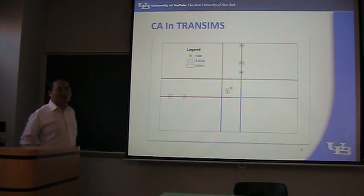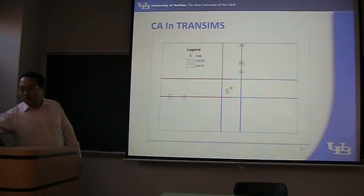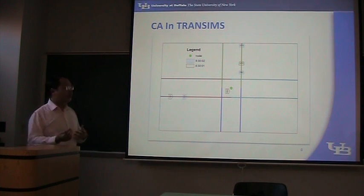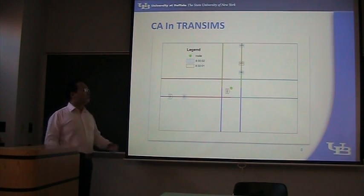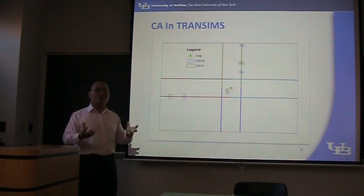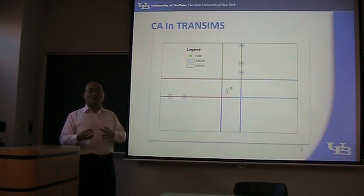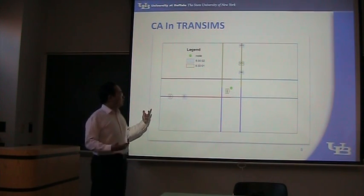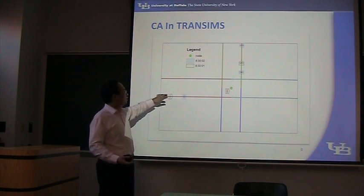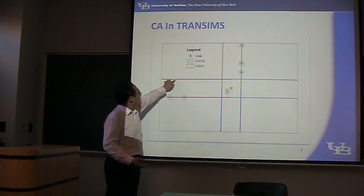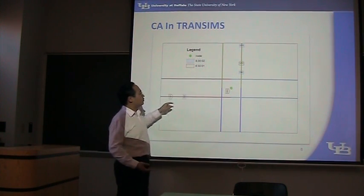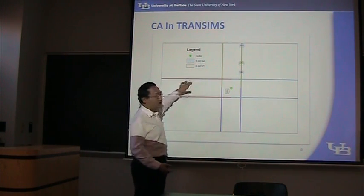Now let's take a look at Transims — cellular automata and Transims. According to a training session, they implemented the cellular automata both for the links and the intersections. I checked the movement by using the arc map, so let me show you what it is.